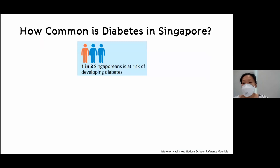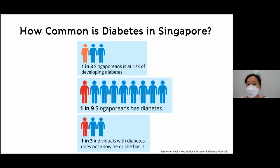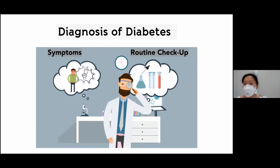The Ministry has declared a war on diabetes with many talks and advertisements on prevention. How common is this in Singapore? It's more common than we think. One in three Singaporeans is at risk of developing diabetes; one in nine Singaporeans has diabetes; and unfortunately, one in three of those with diabetes do not know they have it and have not been diagnosed or treated. Let me tell you more about how to find out if you have diabetes — the signs, symptoms, and tests doctors use.